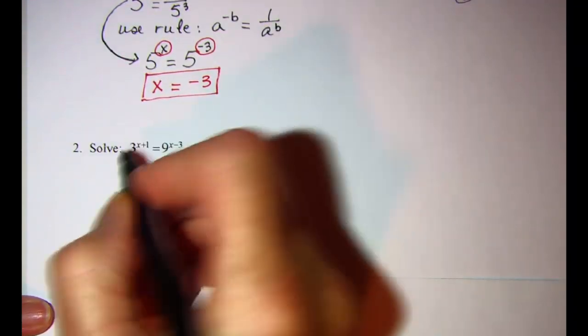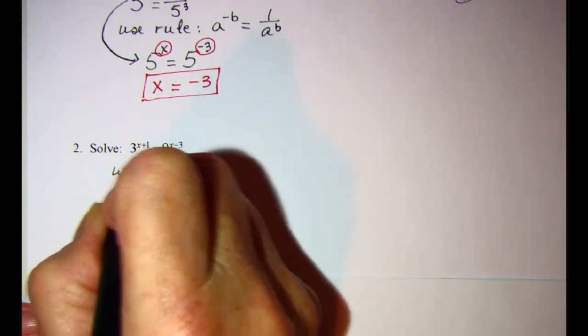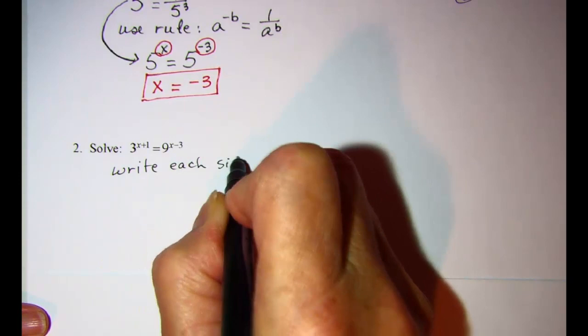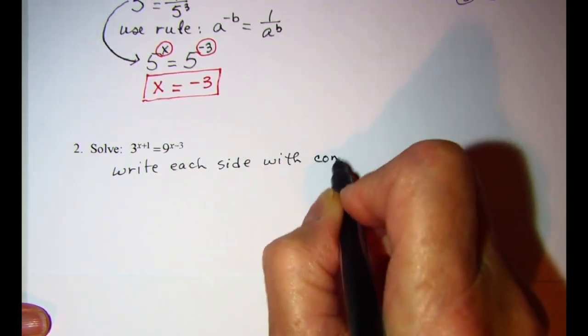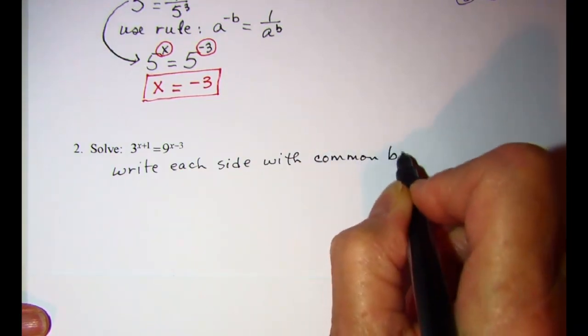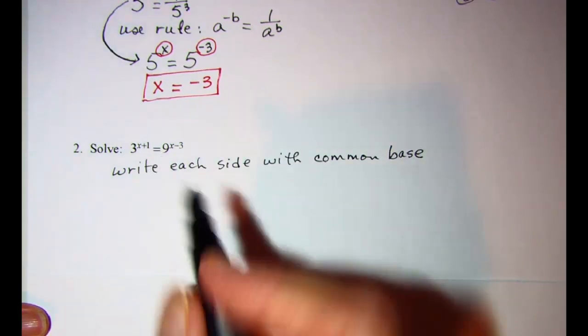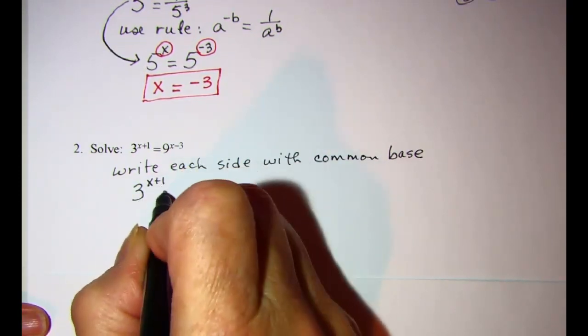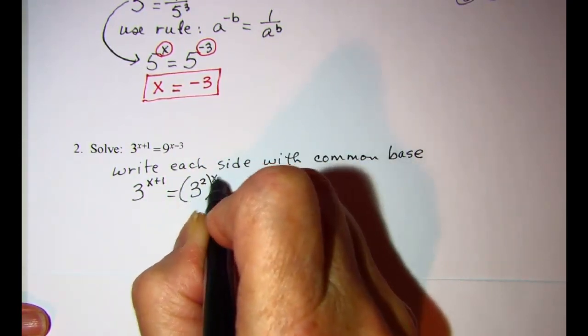My next example, we're going to approach the same way. We'd like our bases to be the same number. So write each side with the common base. Now we know that 9 is the same as 3^2, so we have 3^(x+1) = (3^2)^(x-3).